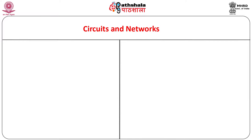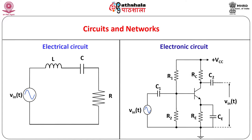Circuit theory deals with circuits of different kinds. We are all familiar with the terms electrical and electronic circuit. Inclusion of semiconductor devices and components is one of the distinguishing features of electronic circuits. A circuit in general can be thought of as a closed assembly consisting of electronic components, devices, probably some measuring instruments, sources of energy, etc., connected with each other using conducting wires.